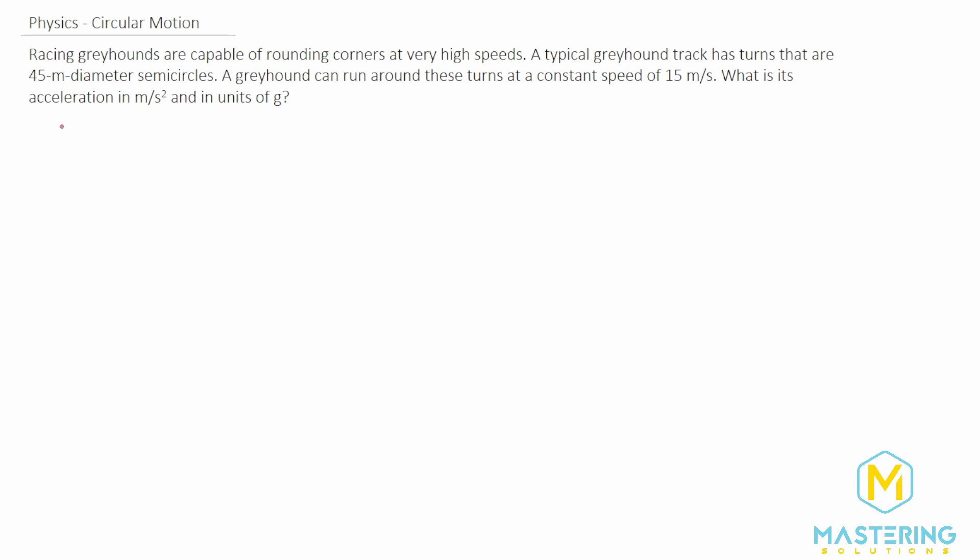Welcome to Mastering Solutions. In this circular motion problem, racing greyhounds are capable of rounding corners at very high speeds. A typical greyhound track has turns that are 45 meter diameter semicircles, and greyhounds take these turns at 15 meters per second at a constant speed.